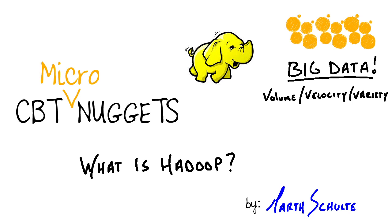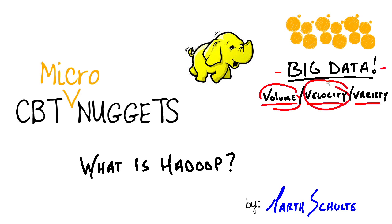To really understand Hadoop, it helps to understand the problem that Hadoop solves, and it's all around big data — we're talking about terabytes and petabytes of data. Big companies like Twitter, Facebook, eBay, Amazon, and Google — how do these companies make sense of petabytes of data efficiently in a time-friendly manner? Especially with the data explosion over the last few years, even our personal data footprints are exponentially growing. Big data can be characterized using the three Vs: volume, velocity, and variety. How do we work with terabytes and petabytes of data from many different formats and sources?